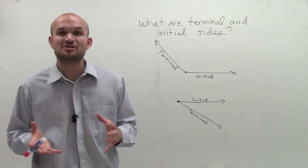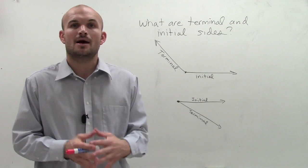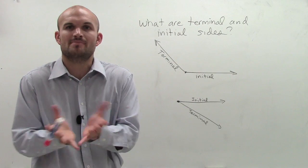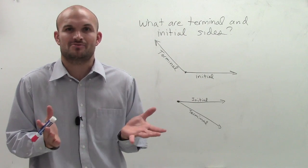Because remember, an angle is going to be the measurement between two rays. But if we didn't have a standard form, where do we start, where's the measurement, where do you start and where do you end that measurement?